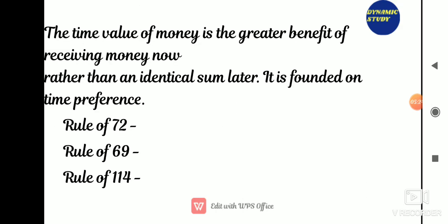There is another rule: Rule 144. This rule is used to estimate how long it will take to quadruple your money. You can use the number 144 — dividing 144 by your expected rate of return will give the answer.